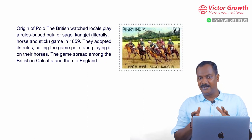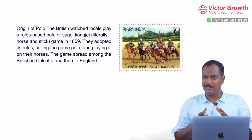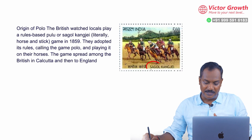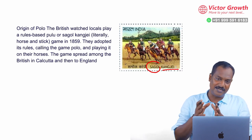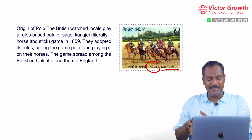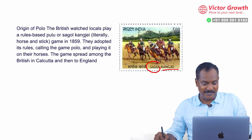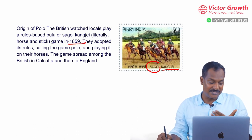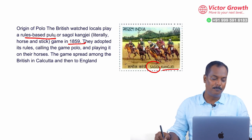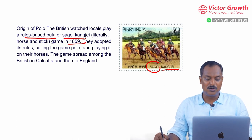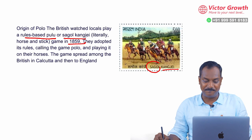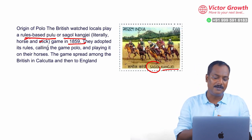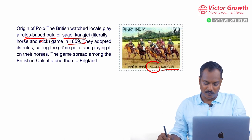Modern day polo, which the British and Western Europe play, has its origin in Manipur in a game called Sagol Kangjei. In 1859, the British saw Manipuris playing a rule-based polo known as Sagol Kangjei, meaning horse and stick. This version was adapted in Europe as modern day polo.